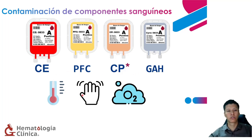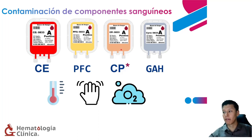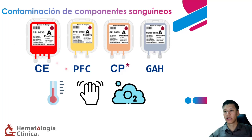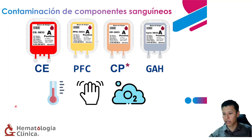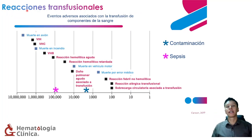Las plaquetas generan mayor relevancia hacia el control microbiológico porque por sí mismas sus condiciones son muy favorables para el desarrollo de microorganismos. No significa que en los otros componentes no sea importante monitorizarlos; de hecho, las especificaciones de calidad para algunos, como el concentrado de eritrocitos, establecen el control microbiológico. Pero hay un énfasis importante en el control de la contaminación de preparados con plaquetas.